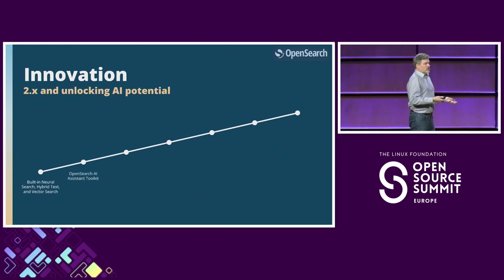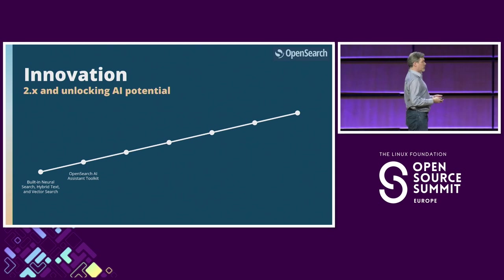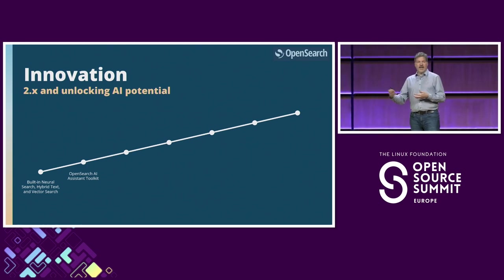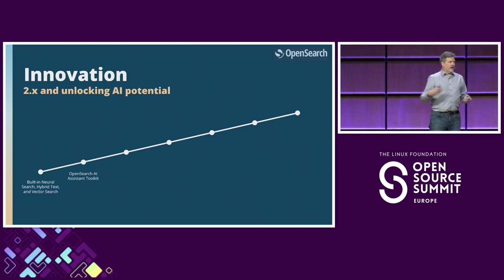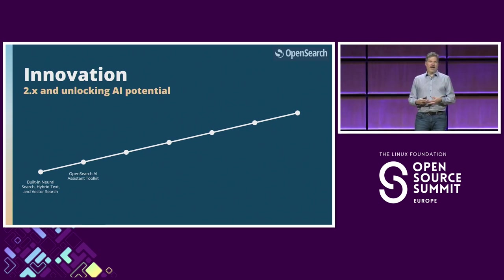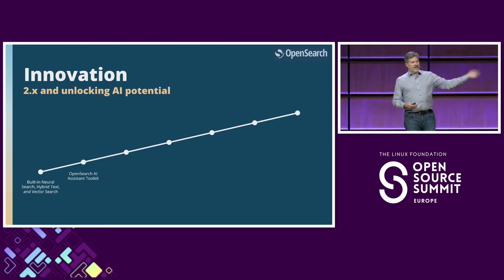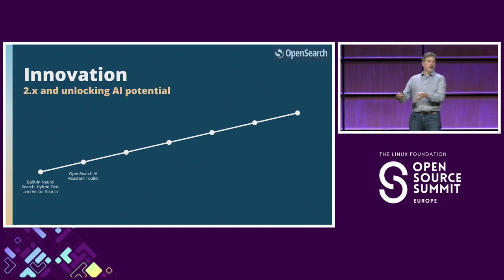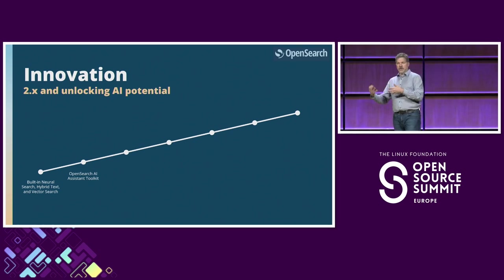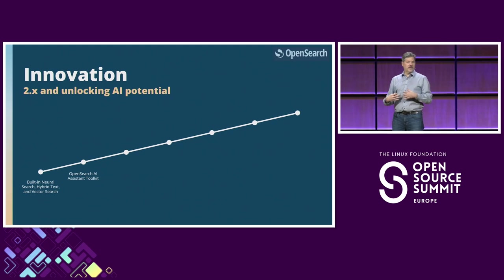Another example: we launched the AI toolkit that enables folks to integrate AI with analytical experiences. So if you wanted an AI to take natural language and turn it into a query, or take a set of log results and do a summarization of it, the AI toolkit provides a framework for integrating those capabilities into the OpenSearch front end.